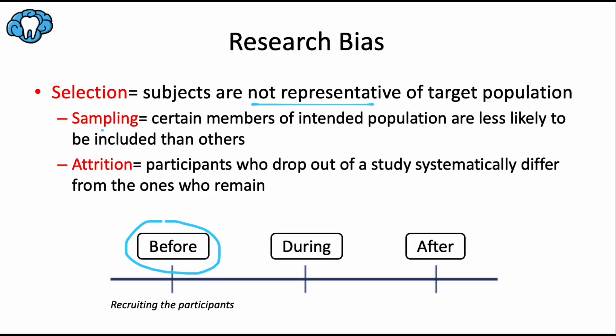Sampling bias is where certain members of the intended population are less likely to be included than others. For example, consider a survey of high school students — that would be our sample — to measure the usage of illegal drugs in teenagers, which would be our target population. This will be a naturally biased sample because it does not include homeschooled students or high school dropouts, so the sample is not fully representative of the target population of teenagers.